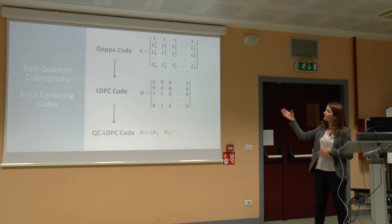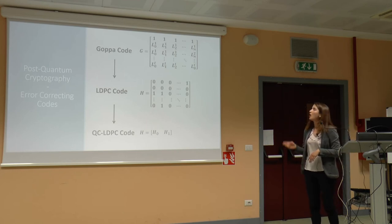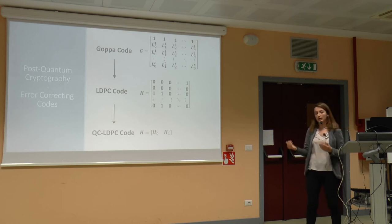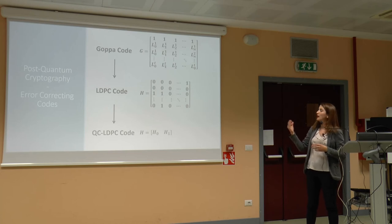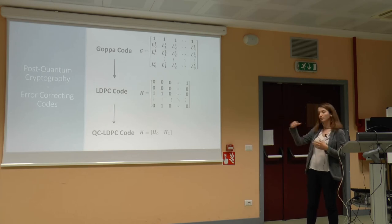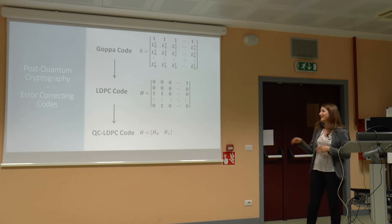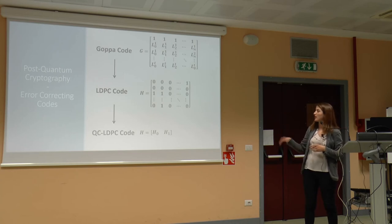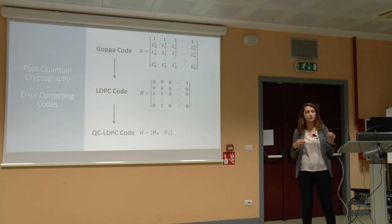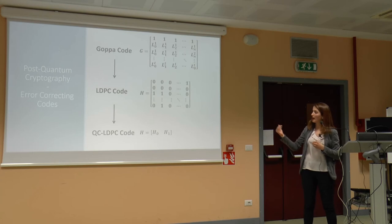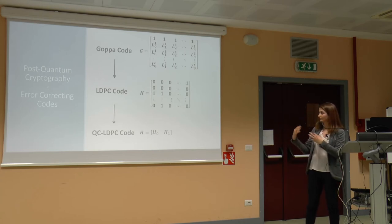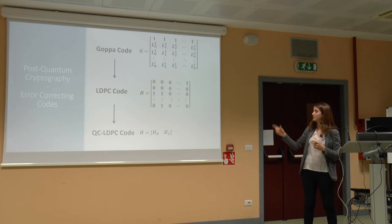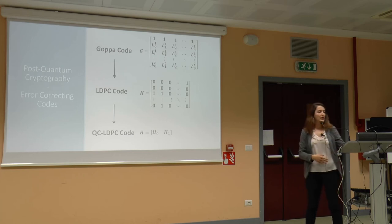Concerning the original McEliece cryptosystem, it used Goppa codes, which lead to dense matrices. Since we are dealing with larger matrices, we want to explore different applications of this cryptosystem using codes with lower density. Recently, low-density parity-check codes — LDPC codes — were proposed. They have a number of ones in the matrix that is much smaller than the total number of elements. A more compact version are quasi-cyclic LDPC codes, in which we need to describe the matrix with just one row and it can be compressed significantly.